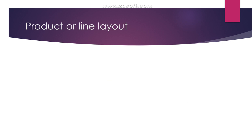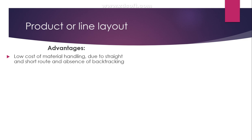Now let's see the advantages of product or assembly line layout. First, there is low cost of material handling due to straight or short routes and the absence of backtracking. Since the operations of production are sequentially determined, the cost of material handling is less. Additionally, there is smooth and uninterrupted operation — once raw materials are input, the final product is obtained without any disturbances or interruptions.